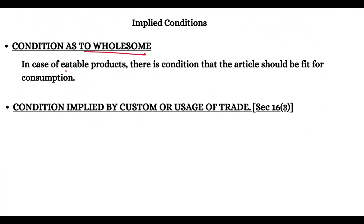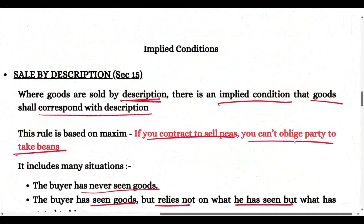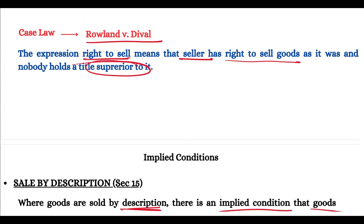The next condition is wholesomeness — if there are edible products, there is a condition that the articles like food and water should be fit for consumption. The normal implied conditions apply, but if there is a custom or usage of trade, then additional conditions may be implied. This was the concept of implied conditions. If you liked the video, please like and subscribe for more such videos. Thank you, and if you have any issues you can ask in the comments.